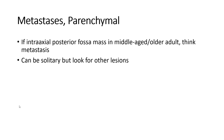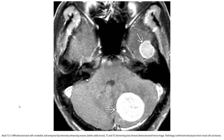Metastasis to the parenchyma: if an intra-axial posterior fossa mass is seen in middle-aged or older adults, consider metastasis first. It can be solitary, but look for other lesions. On axial T1C+, a large enhancing mass in the left cerebral and temporal region with T1 shortening nodules demonstrates hemorrhage. Pathology confirmed parenchymal metastasis.